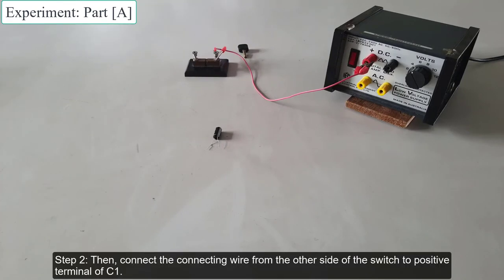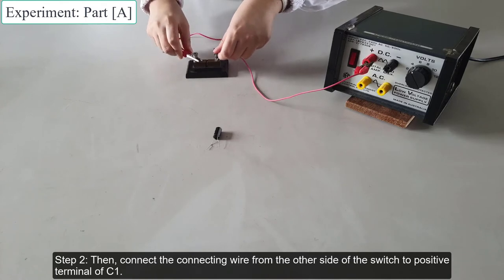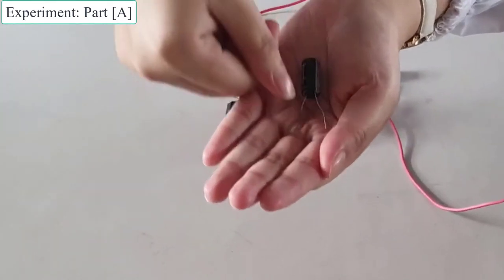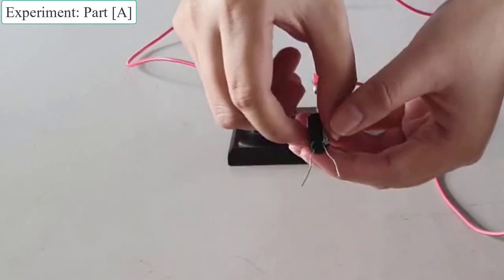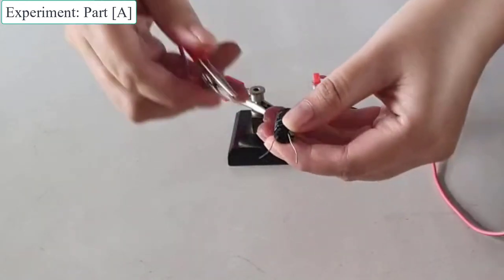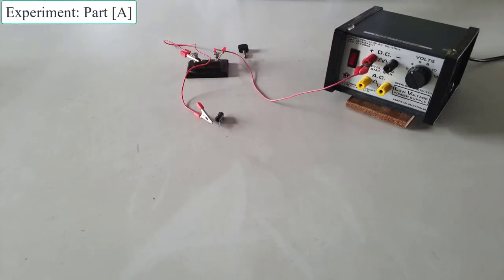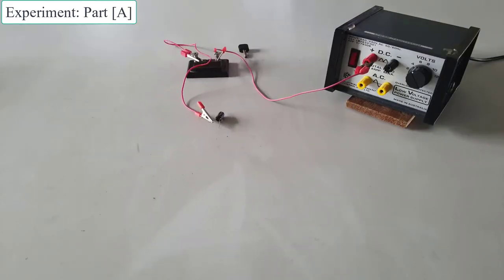Then, connect the connecting wire from the other side of the switch to the positive terminal of C1.